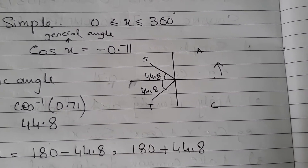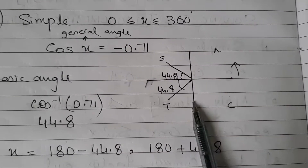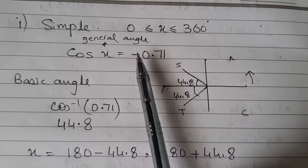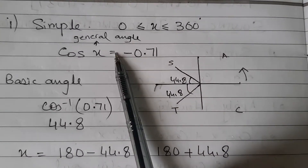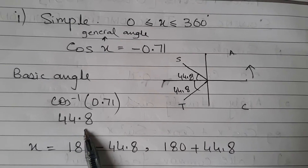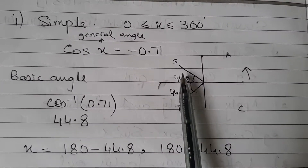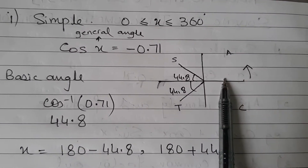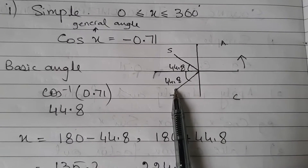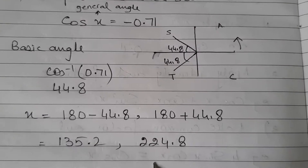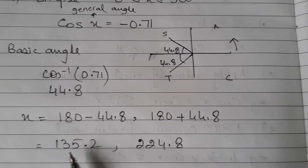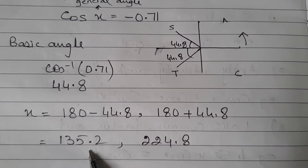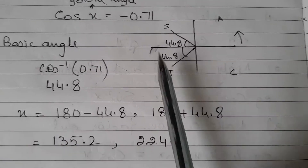I have explained that all in my previous video. My whole purpose here is to find the basic angle first, because then it will be easy to find the general angle. After finding the quadrant from the negative sign, I find the basic angle, which is 44.8°. So one general angle is 180° − 44.8° and the other is 180° + 44.8°. You can verify: cos(135.2°) and cos(224.8°) will both give you −0.71. This is the simple case.